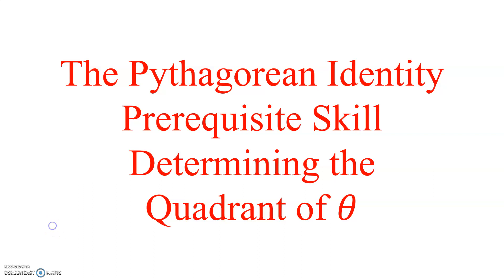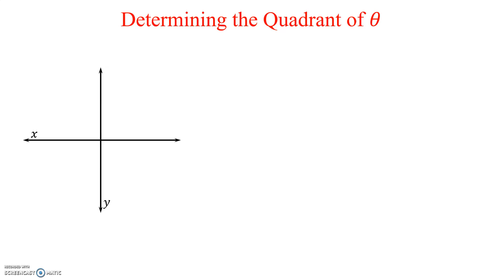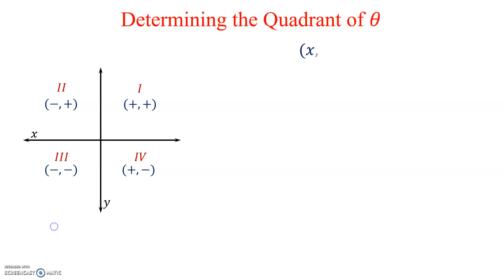We look at our Cartesian plane, which has quadrants 1, 2, 3, and 4. In each of the four quadrants we identify each ordered pair's signs: in quadrant 1 the signs are positive/positive, quadrant 2 negative/positive, quadrant 3 negative/negative, and quadrant 4 is positive/negative. Our ordered pairs are written in the form (x, y).